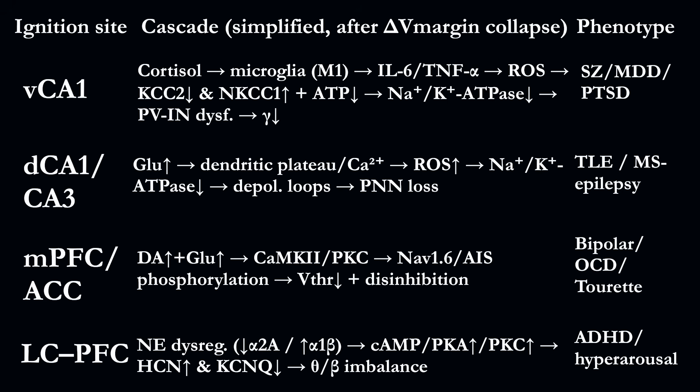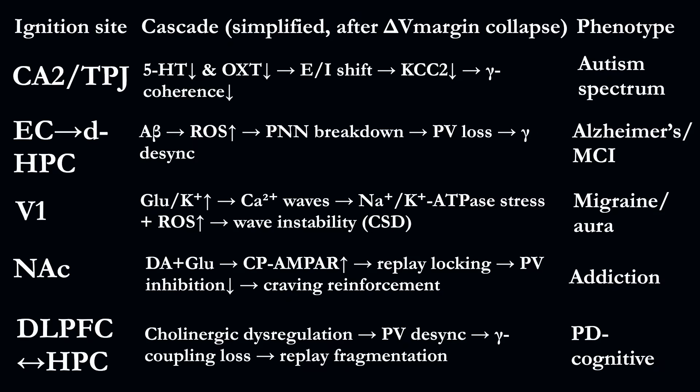If the ignition site is the ventral CA1, the phenotype resembles schizophrenia, depression or PTSD. If it occurs in CA3, dendritic plateau loops may drive temporal lobe epilepsy. In the medial prefrontal cortex, it produces patterns seen in bipolar disorder, OCD or Tourette's. And in dopaminergic hubs, it reinforces circuits of addiction. This is why so many distinct disorders may share one underlying cause.